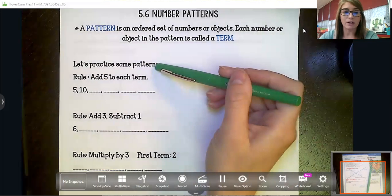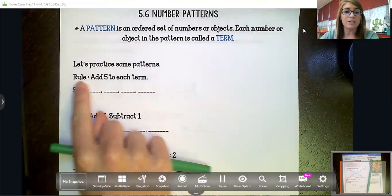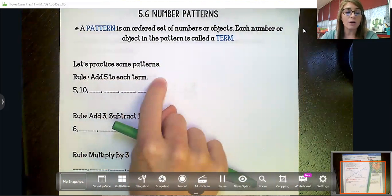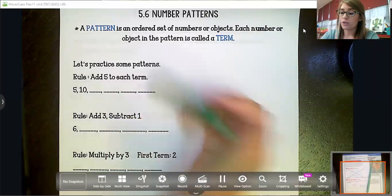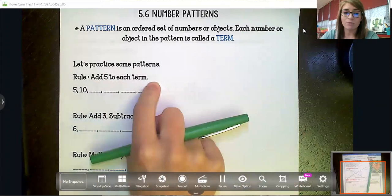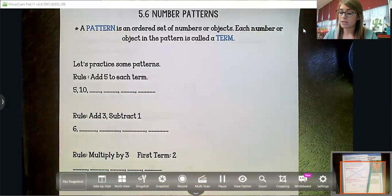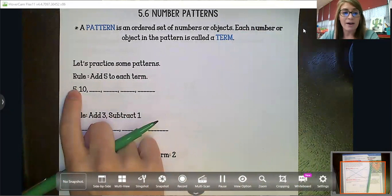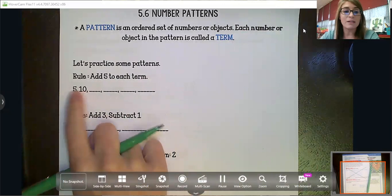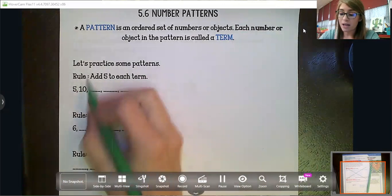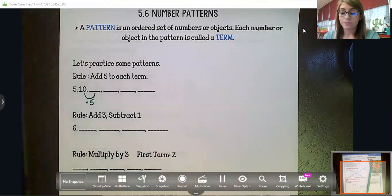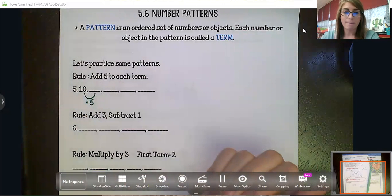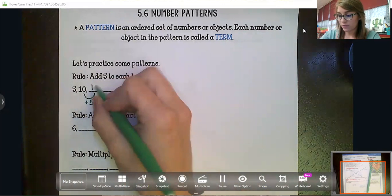Let's practice some patterns. Most of the time you're going to get patterns that give you a rule to follow to find each term. This rule is to add five to each term and they've given us the first two. We've got five and then five plus five is ten. To get to the next one, we're going to add five to that term. What is ten plus five? Very good, it is fifteen.